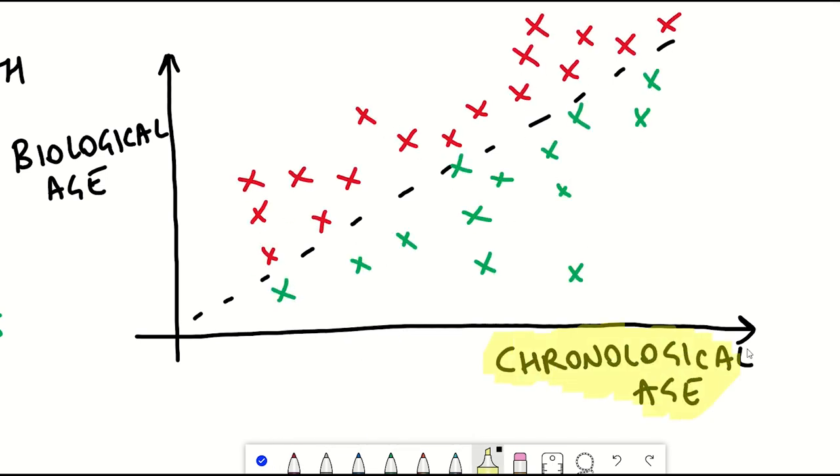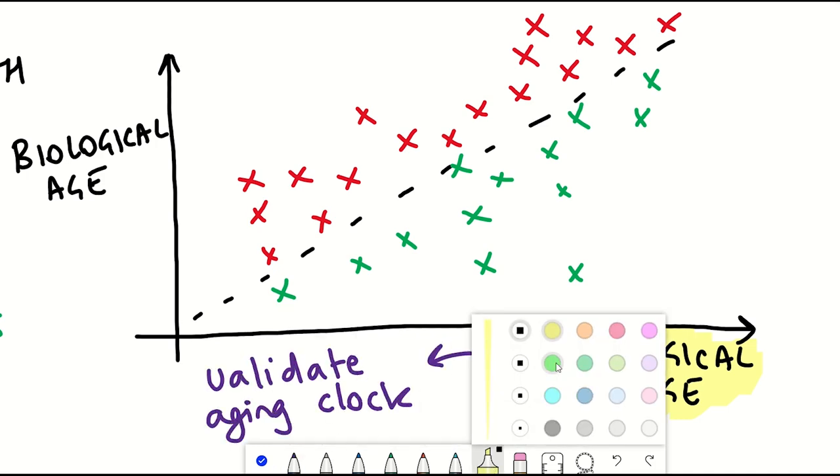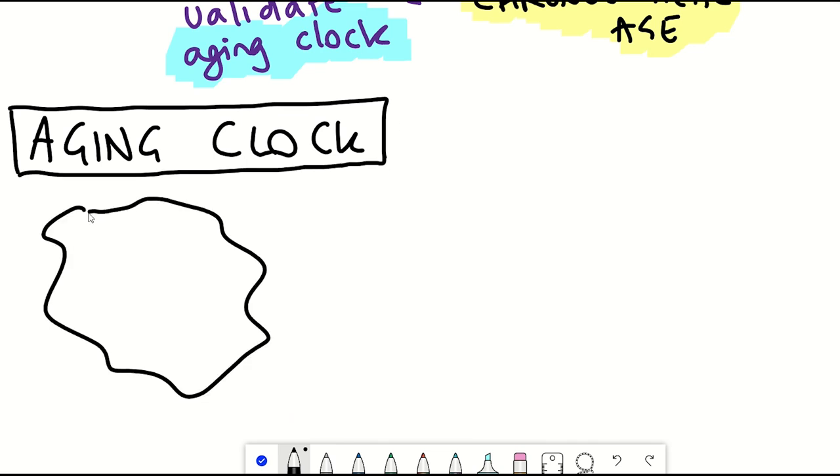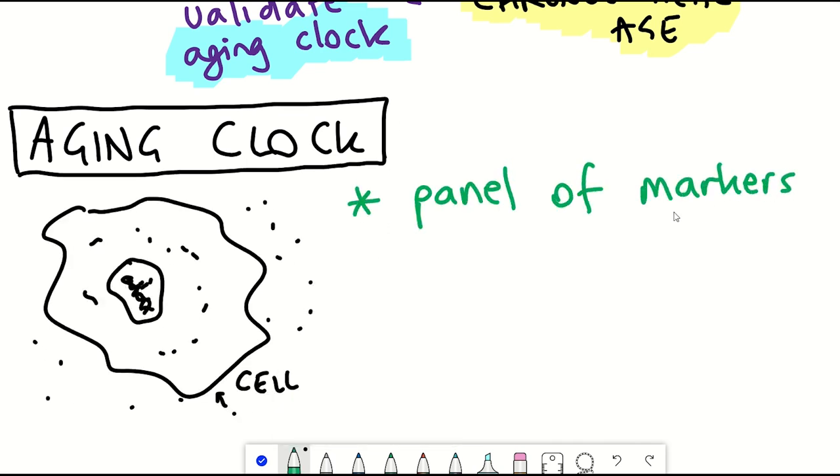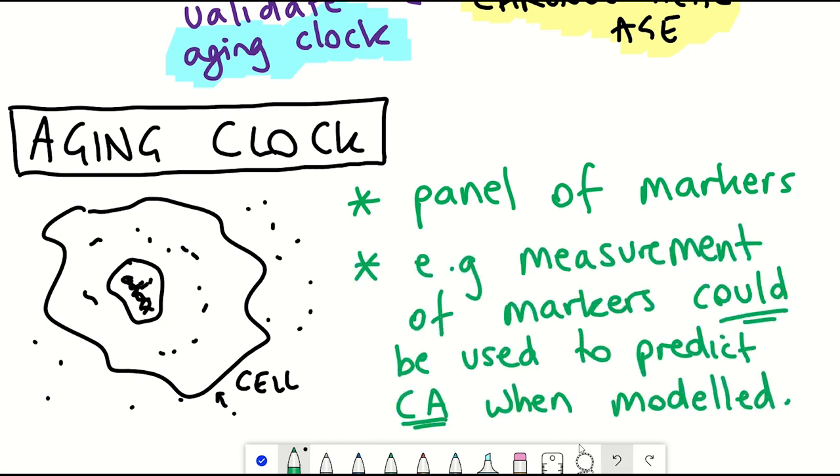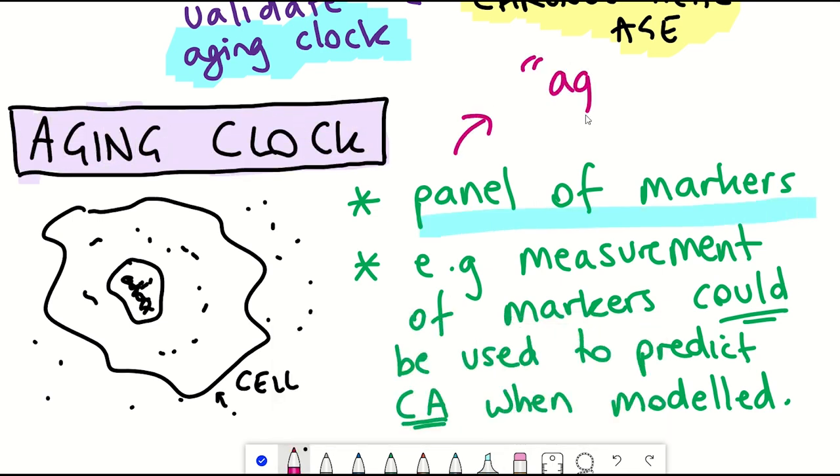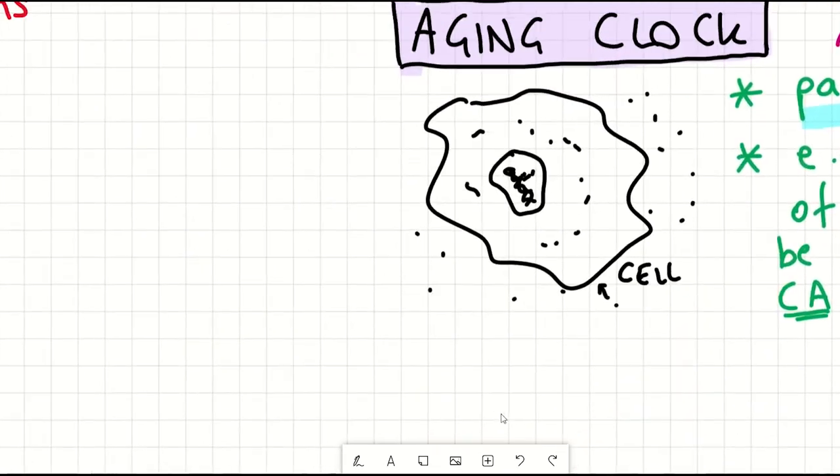So what exactly is an aging clock then? Well a simple explanation is some sort of panel of different markers which we'll look at later that can be used to predict chronological age when modeled. And so you might think then well what's the point of understanding biological age?